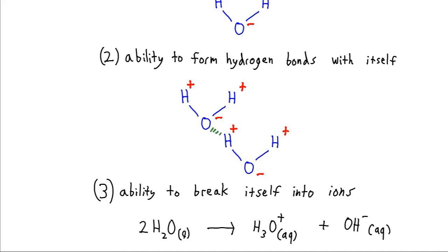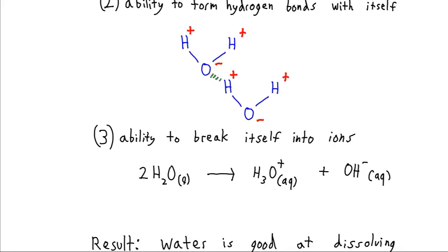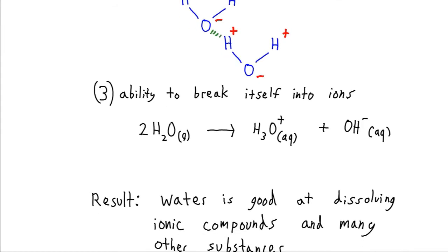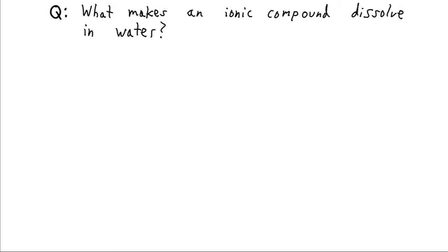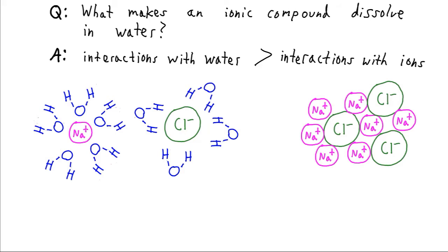One of the major results of all these properties is that water is very good at dissolving substances, especially ionic compounds, because it can interact with those strong ionic charges. Since water has such strong interactions with ionic compounds, we're going to restrict our discussion to ionic compounds for the moment. What makes an ionic compound dissolve in water? It dissolves if the interactions with the water molecules are stronger than the interactions it would have just being by itself, with positive cations interacting with negative anions.